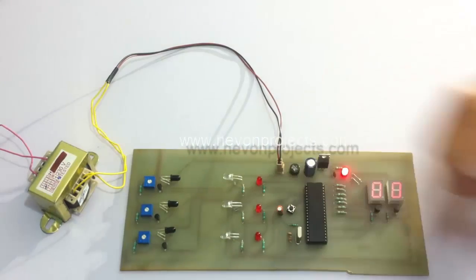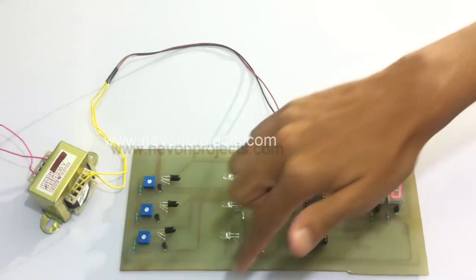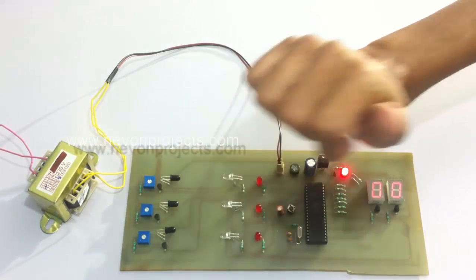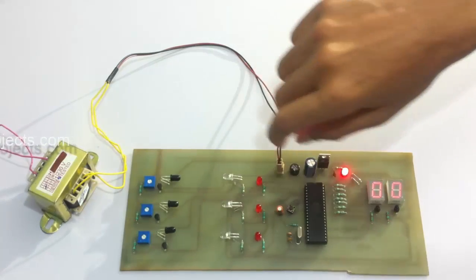The transmitter constantly transmits light and the receiver constantly receives the IR rays. Whenever an object comes in between, the rays get blocked and it sends a signal to the microcontroller. We have mounted three sensors.